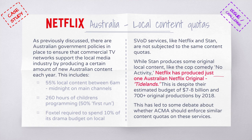These are laws imposed on traditional broadcast media in Australia. However, streaming video-on-demand services like Netflix and Stan are not subject to the same content quotas. Although Stan produces some original content like the cop comedy No Activity, Netflix has produced just one Australian Netflix original — called Tidelands — which was set for release by the end of 2018. Even though Netflix had an estimated budget of $7–$8 billion in 2018 and over 700 original productions, only one was Australian.